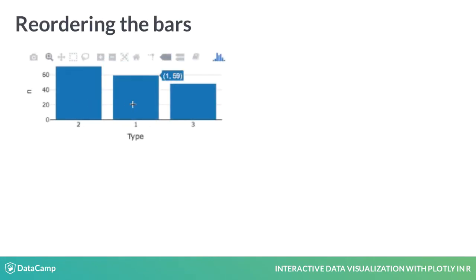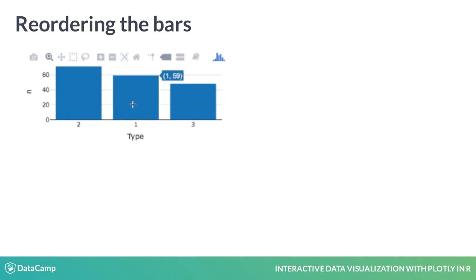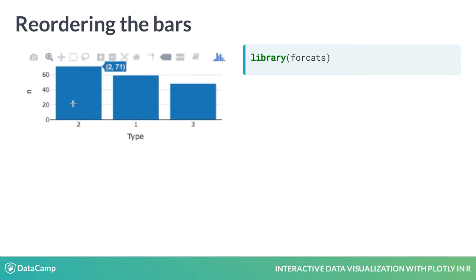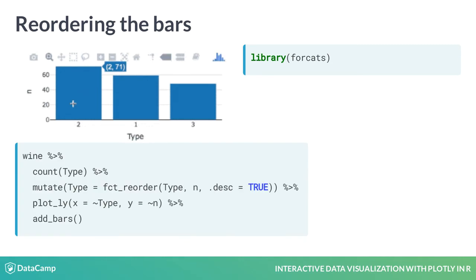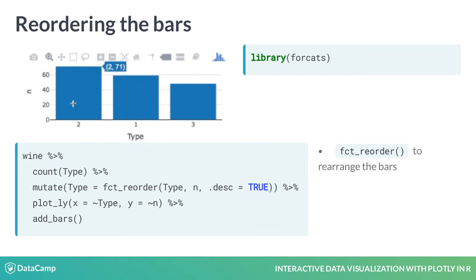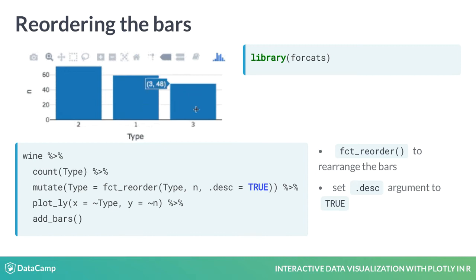With only three wine types, our bar chart was easy enough to read. However, with more categories, bar charts can become difficult to read unless the bars are sorted. For example, we may wish to rearrange the bars in descending order. To do this, we use the fct_reorder command found in the forcats package, adding a single line of code to our data pipeline. Mutate creates a new variable, type, and fct_reorder reorders the levels of type by the values in n. To organize the levels in descending order, we add the argument .desc equals TRUE.